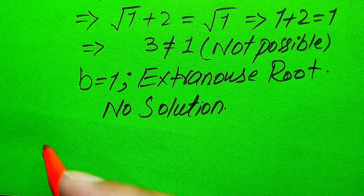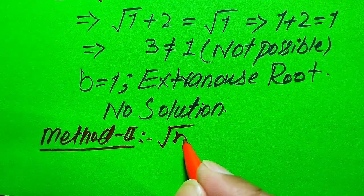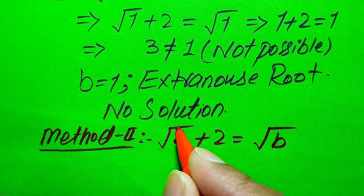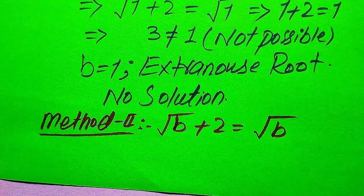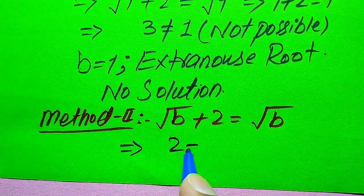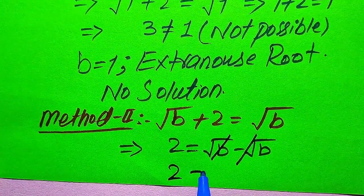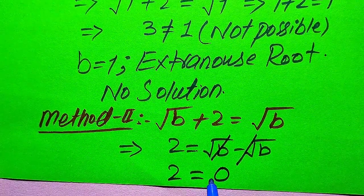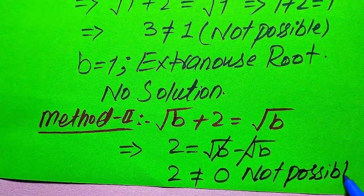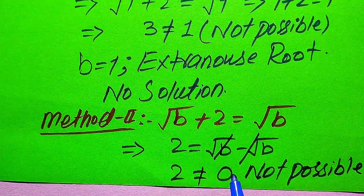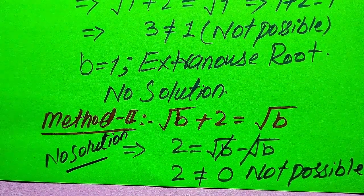For method two, we copy down the given equation: √(B+2) = √B. This method is very straightforward. We move √B to the left-hand side, giving 2 = √B - √B, which simplifies to 2 = 0. Since 2 is not equal to 0, this is a contradiction, meaning we cannot find any value of B that satisfies the equation. Therefore, the equation has no solution.